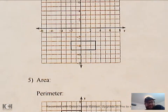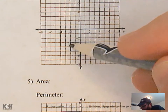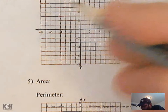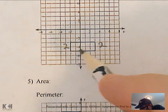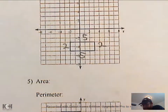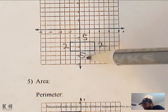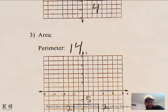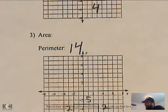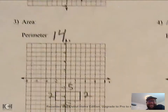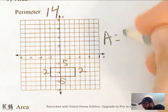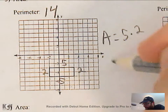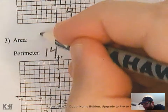Let's look at number three. This one has a width of two, so both of those sides are two. And then this side is one, two, three, four, five. For perimeter, you just add them all together: five plus two is seven, seven plus seven is 14. So perimeter is 14. Then area is just length times width — five times two, which is 10. So area is 10.